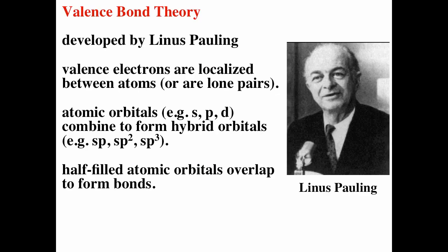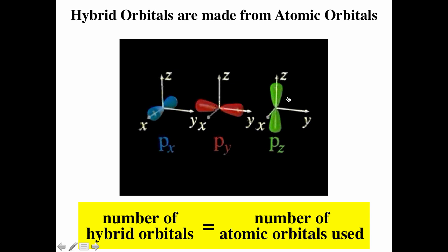Valence bond theory was developed by Linus Pauling, the only individual to ever win two Nobel prizes by himself. Like Lewis electron diagrams and VSEPR, valence bond theory is just about the valence electrons. Valence bond theory says valence electrons are localized between atoms or as lone pairs, and atomic orbitals combine to form hybrid orbitals. Half-filled atomic orbitals can overlap with hybrid orbitals to form bonds. Hybrid orbitals are made from atomic orbitals, and the number of atomic orbitals used equals the number of hybrid orbitals formed. Hybrid orbitals are formed by mixing of the hydrogen-like S, P, and D orbitals.